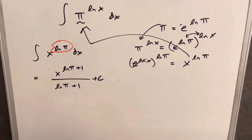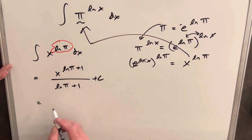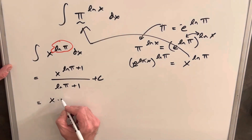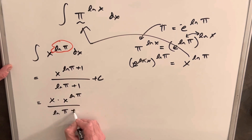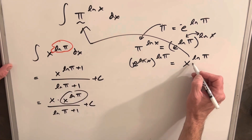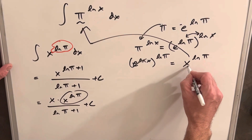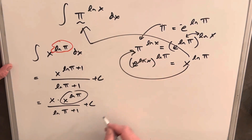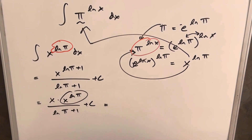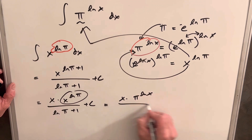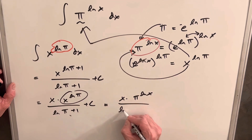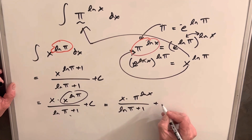Let's try to get it back looking a little more like the original, since that's usually the polite thing to do. We rewrite the numerator as a product: x times x^(ln π), all over ln π + 1 plus C. Then we reverse our earlier substitution — x^(ln π) goes back to π^(ln x) — giving us the final answer: x times π^(ln x), divided by ln π + 1, plus C. And we're done.